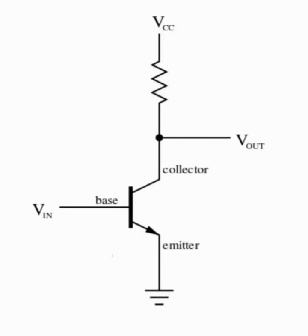Let's understand the transistor operation through this simple circuit. As you can see, it's an NPN transistor because of the direction of the current. You can see this is your N region, this is your P region, and this